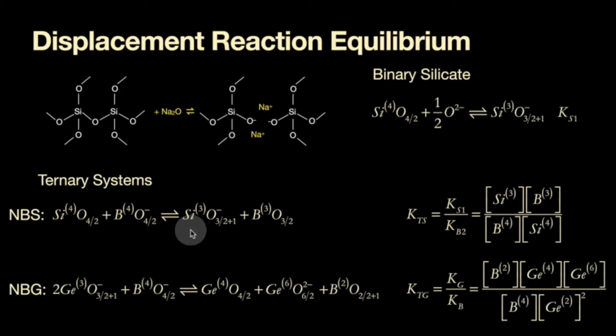In ternary systems now we have a displacement where you have say a regularly coordinate silicon cation and you have an over coordinate boron and that may not be the happiest one so it displaces this one into an under coordinate silicon and therefore becomes a regularly coordinate boron and in a similar way also for germanium. Here you can write the equilibrium constants in such a way that you just use the law of mass action for ideal solutions and find that you actually can use the ratio of the equilibrium constants for binary systems to describe that of the ternary system.